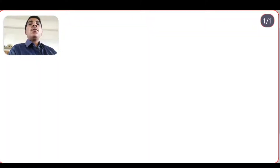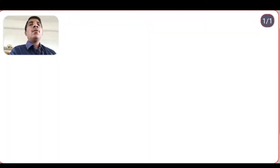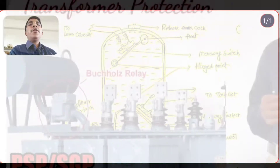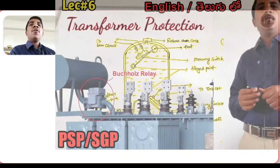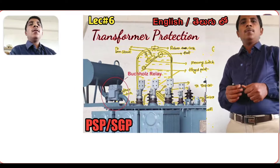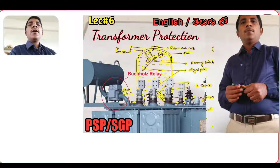Hi to all. In the previous class, we studied about what are the faults occurring in transformers: internal fault, external fault, overheating and short circuit fault, incipient faults — so many types of faults which are occurring in distribution transformers as well as power transformers.